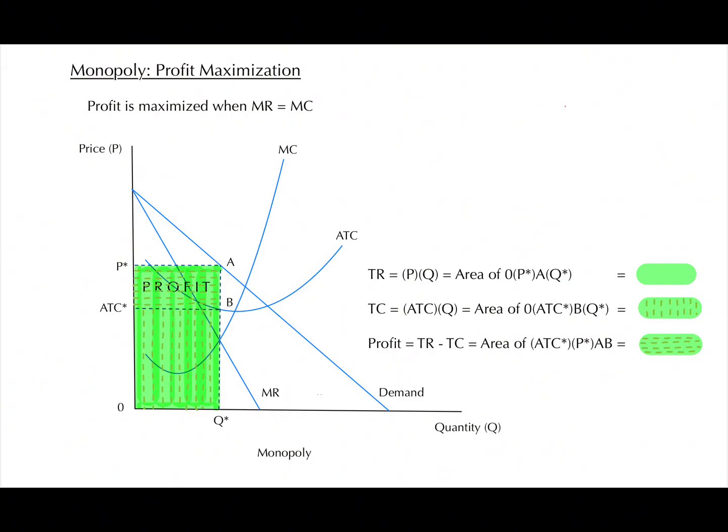To find total cost, we can multiply ATC and Q. In this case, ATC-star times Q-star. And now we can calculate profit, since we know profit equals total revenue minus total cost. Thus, our final equation will be P-star minus ATC-star altogether times Q-star.